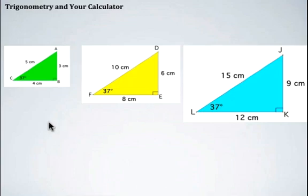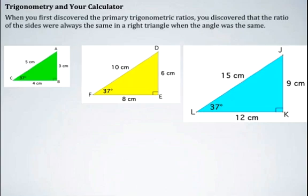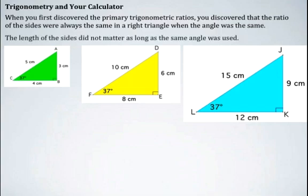When we started to look at the primary trigonometric ratios, we started to see a pattern. We discovered that the ratio of the sides were always the same in a right triangle when the angle was the same. What we mean by that is, for the 37-degree angle, the primary trigonometric ratios were all identical, and it did not matter how long the sides were, as long as we were looking at the same angle.